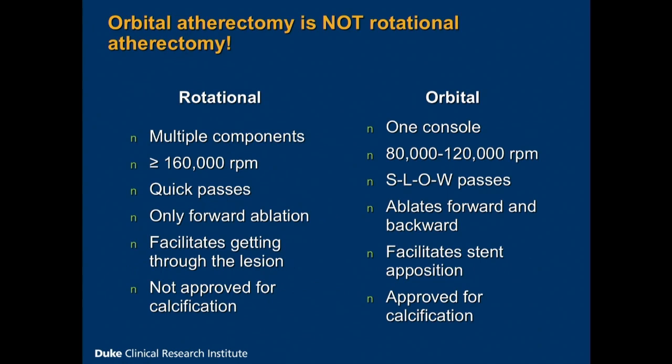I want to point out the differences between these two devices, because now we have two options that are commercially available for dealing with calcified coronary lesions. Rotational atherectomy, as you all know, is being iterated — it's going to be a much simpler device to use, but it does involve multiple components. It generally uses much faster rotations, about 160,000 RPMs or greater. This is a pecking motion that you use with the burr — very quick passes. It only ablates forward. Clinical practice has evolved to use rotational atherectomy primarily for coronary calcification and potentially hourglass stents or non-expandable stents, although it is not FDA approved for that indication.